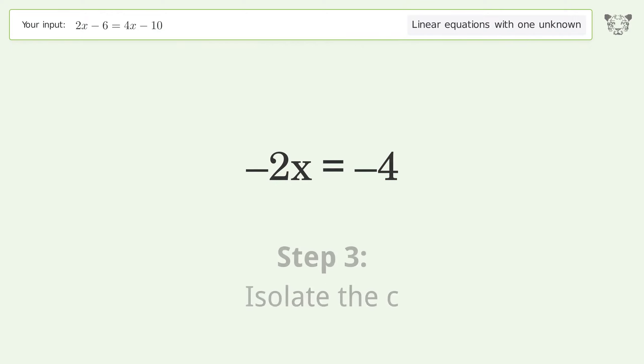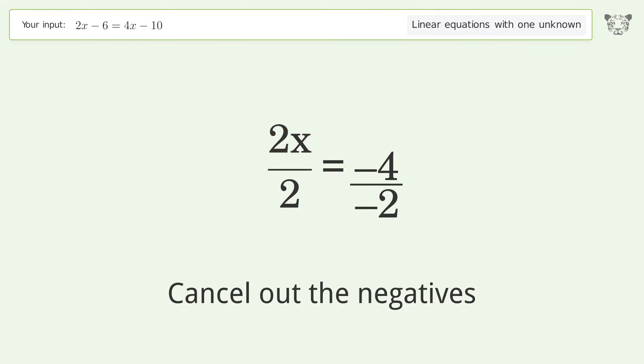Isolate the x. Divide both sides by negative 2. Cancel out the negatives. Simplify the fraction. Cancel out the negatives.